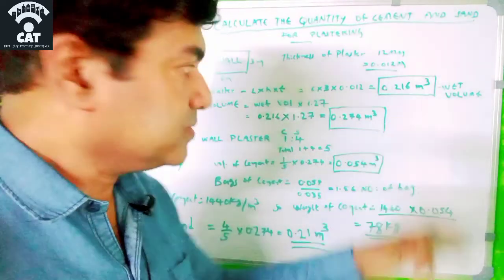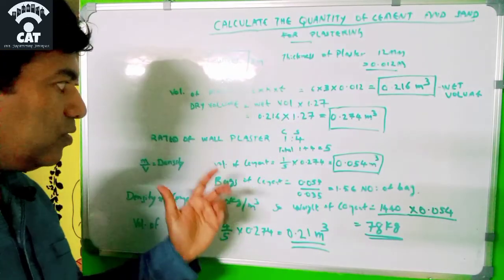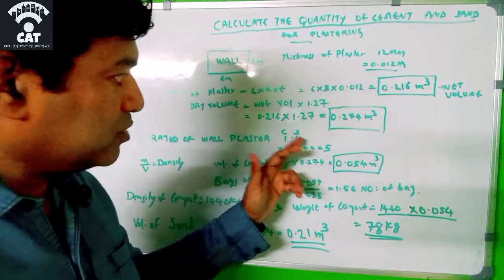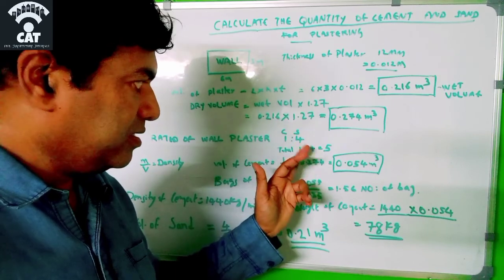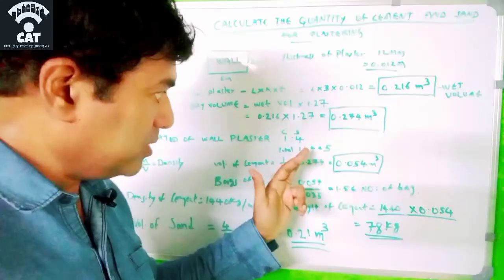In the wet volume there is water. Now, the ratio as we said is 1:4, where 1 is cement and 4 is sand. So 1 + 4 = 5.